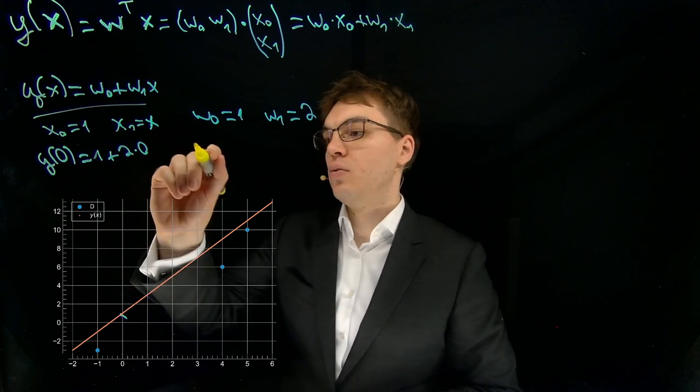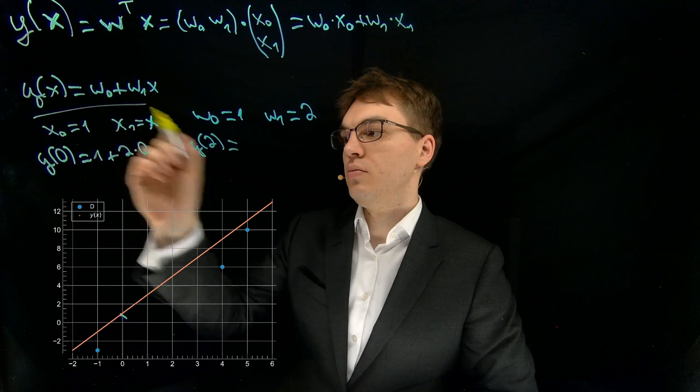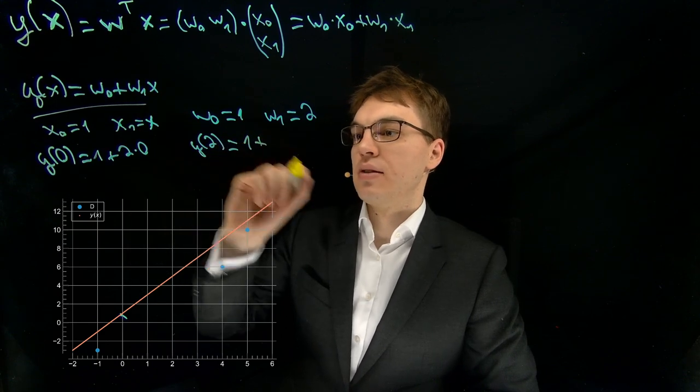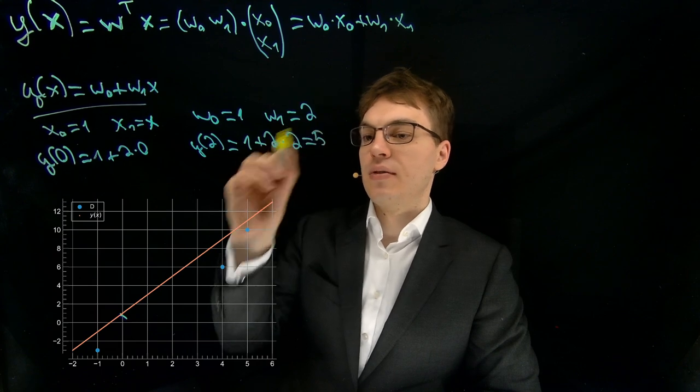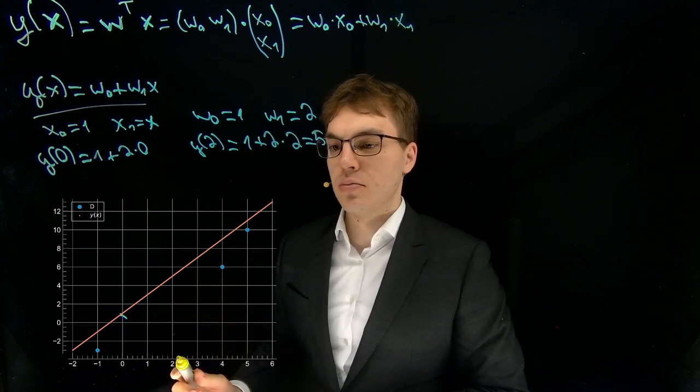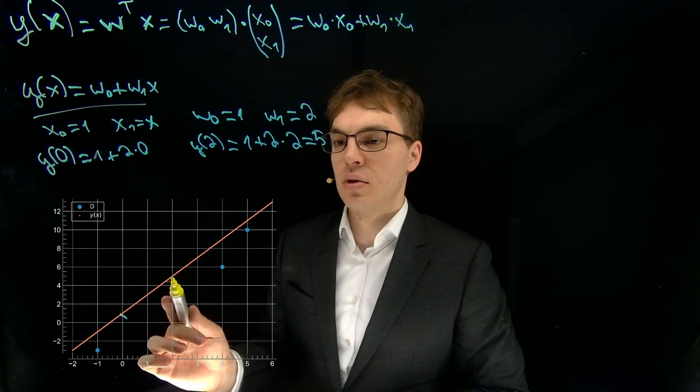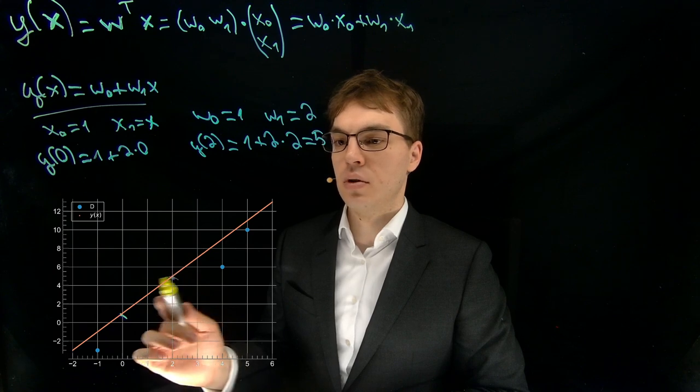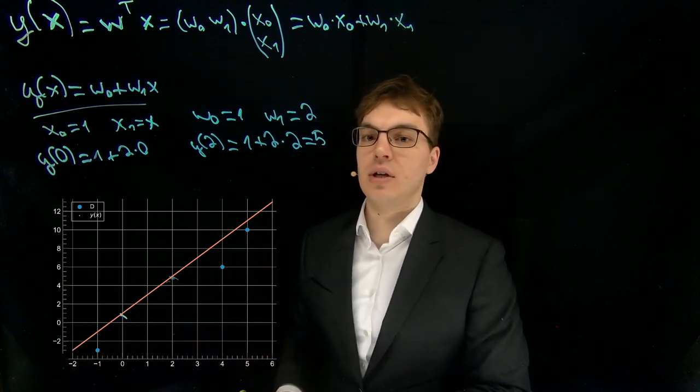We get y of 2 equals 1 plus 2 times 2 equals 5. So let's go to the position of 2, and what we get here is the value 5. And then we just connect them and we get a straight line.